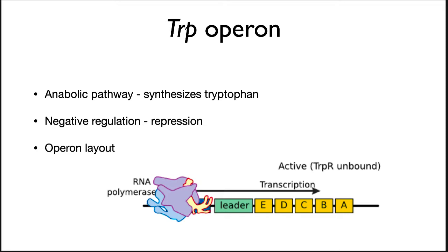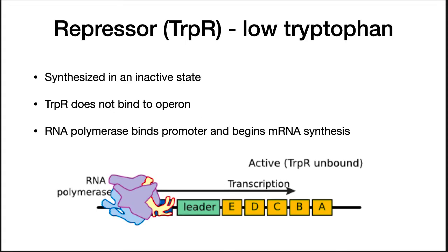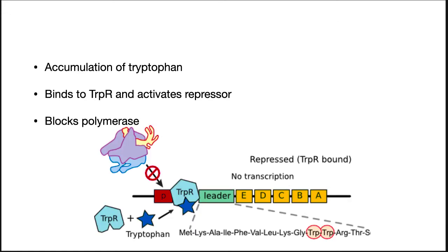We now move on to the TRIP operon. It is an example of an anabolic operon. It is under negative regulation by the TRIP repressor, TRIP-R. Pictured here is the operon layout. There are five genes involved in synthesizing tryptophan from Chorismate: E, D, C, B, and A. There's a promoter and then something called the leader peptide. TRIP-R, when synthesized, is inactive. Under low tryptophan concentrations — which is the co-repressor for TRIP-R — TRIP-R does not bind to its site on the DNA. RNA polymerase binds to the promoter and begins mRNA synthesis. As the cell expresses the TRIP enzymes and synthesizes tryptophan, its concentration increases and it eventually binds to TRIP-R, activating it. TRIP-R then binds to the site on the DNA and blocks transcription.